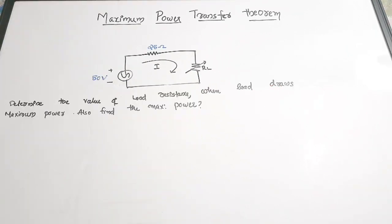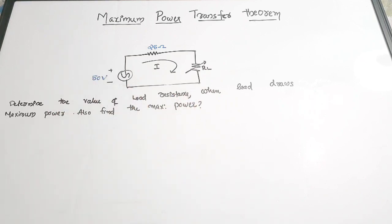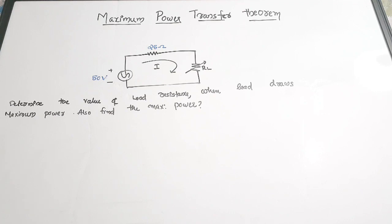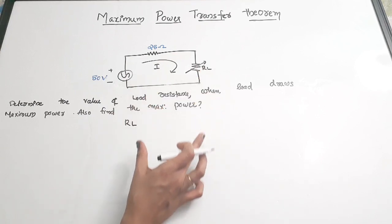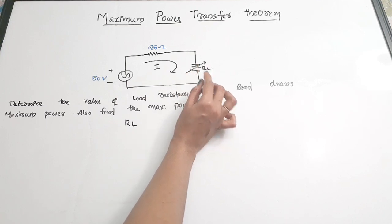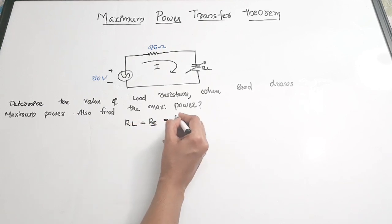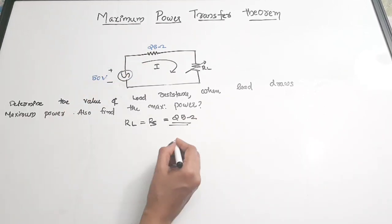Question 1: Determine the value of load resistance RL when the load draws maximum power, and also find the maximum power. According to the Maximum Power Transfer Theorem, when the load draws maximum power, the load resistance equals the source resistance. Since Rs is given as 25 Ω, RL = Rs = 25 Ω.